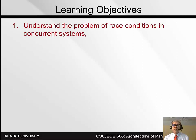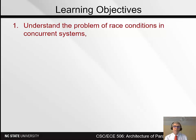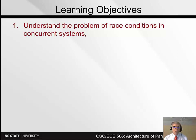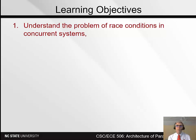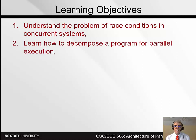The first one is to understand the problem of race conditions in concurrent systems. If you have a serial program, it carries out operations in exactly the order that the programmer specified. But if you have multiple threads or multiple processes working at the same time, you don't know whether one of them is going to get ahead of the other one, and they need to synchronize their accesses to make sure that when one writes a variable and the other needs to read it, the write actually happens before the read — and that's a race condition.